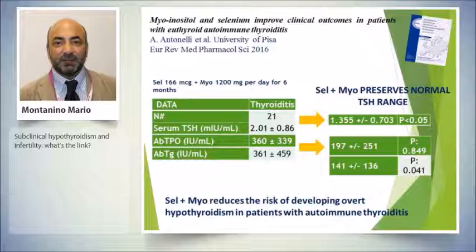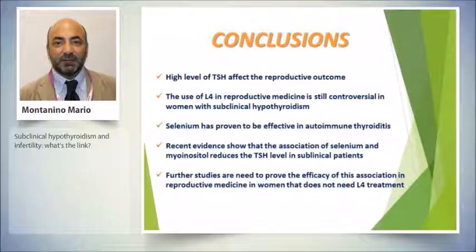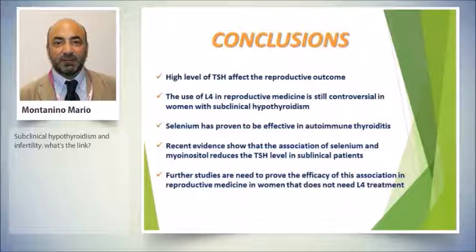In summary: myo-inositol is a precursor of inositol-1,4,5-triphosphate, reduces TSH levels acting as a second messenger — just as it is a second messenger for FSH, it is also a second messenger for TSH — regulates iodine organification, and reduces thyroid stress from TSH stimulation, potentially delaying or decreasing the need for levothyroxine. A study from the University of Pisa confirmed that selenium plus myo-inositol preserves normal TSH range and reduces antibody titers. High TSH levels undeniably affect reproductive outcomes. Selenium is effective in autoimmune thyroiditis such as Hashimoto's, and the combination of selenium plus myo-inositol reduces TSH in subclinical patients. Further studies are needed to prove this association's efficacy in reproductive medicine for patients who do not require levothyroxine treatment.